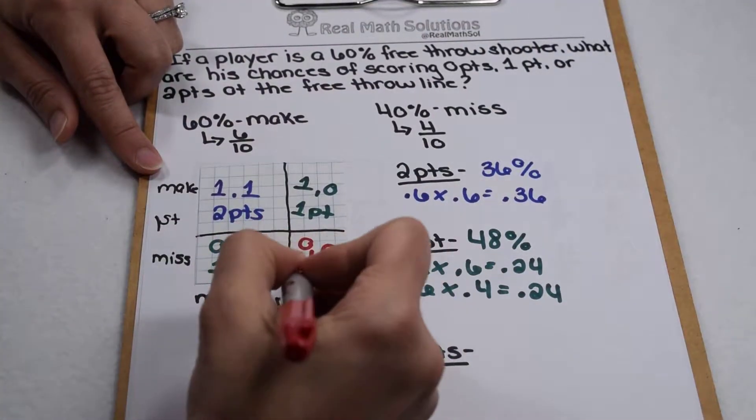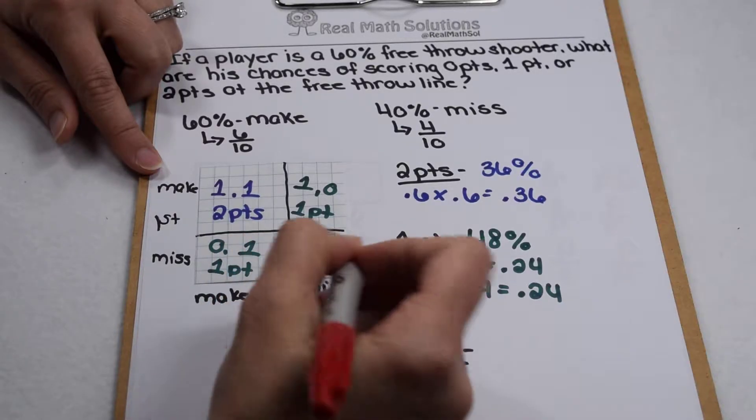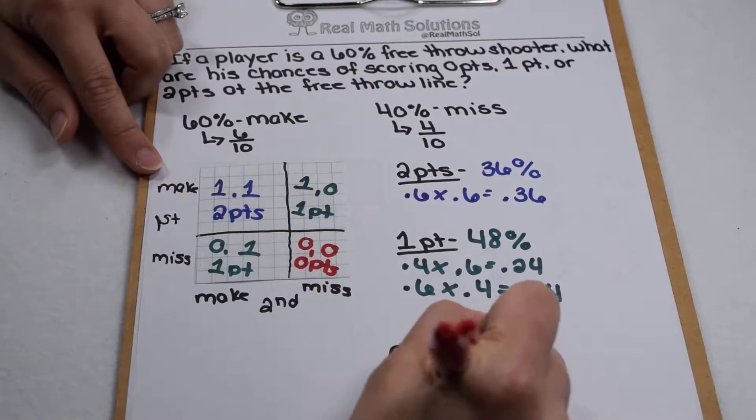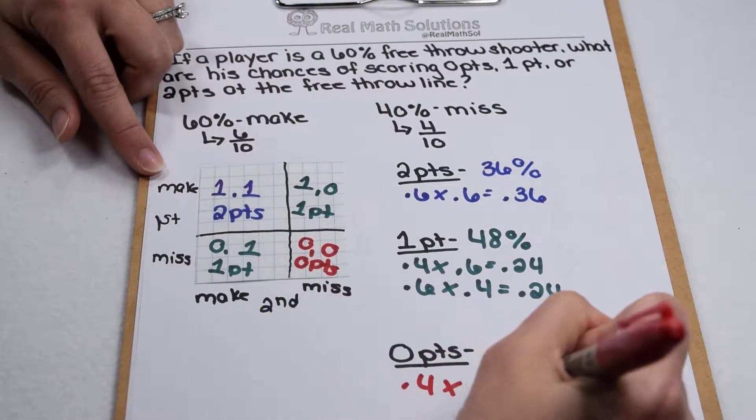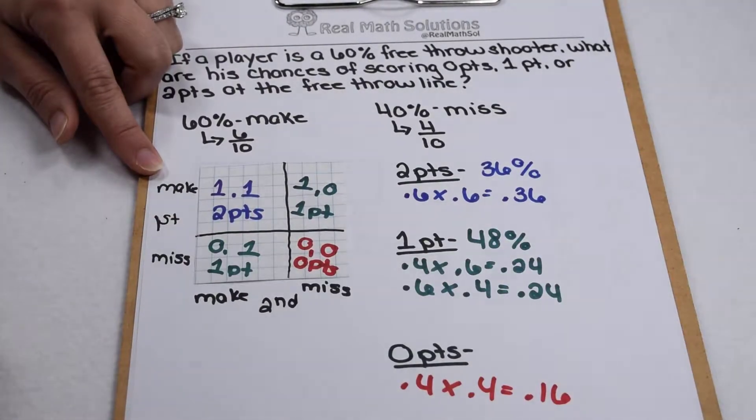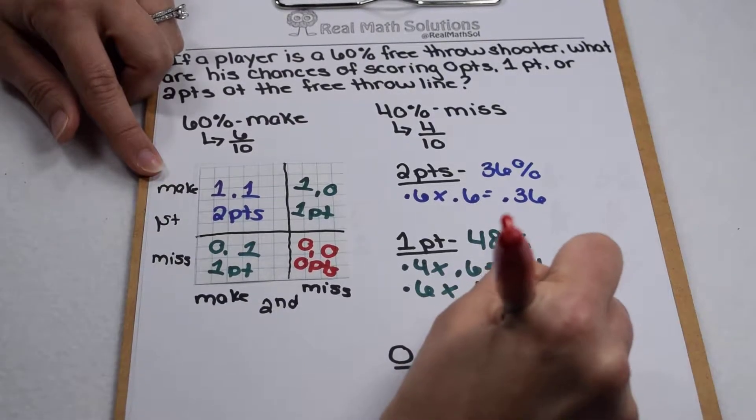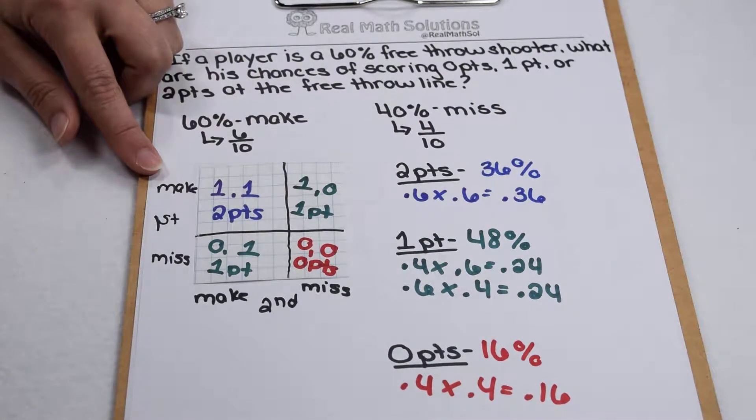Our last section down here would be 0 points. So that's 4 tenths by 4 tenths for 16 hundredths, or a 16% chance of scoring 0 points.